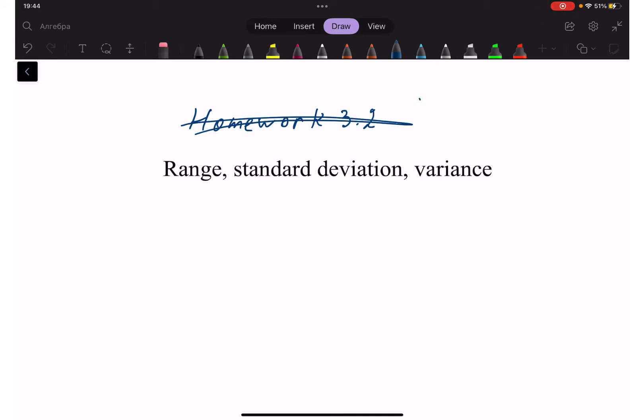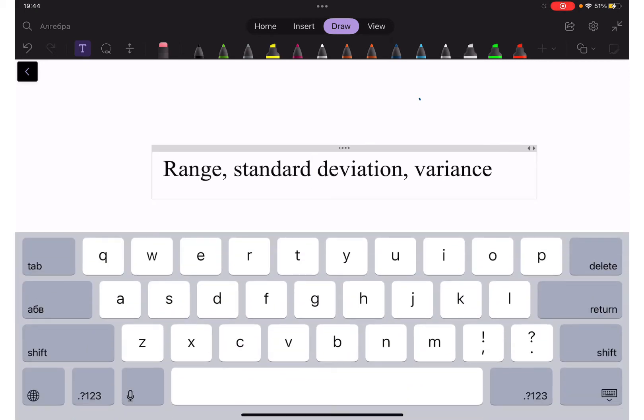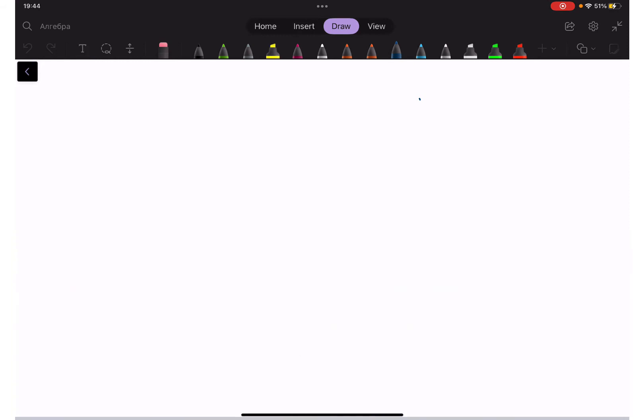So box plot - this is what we have. Those are outliers. This one is minimum, this one is maximum. This is Q1, this is Q3, and this is median Q2 - not mean, median.